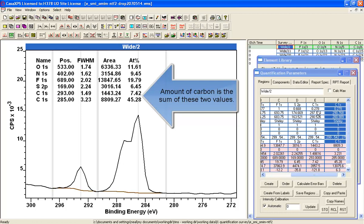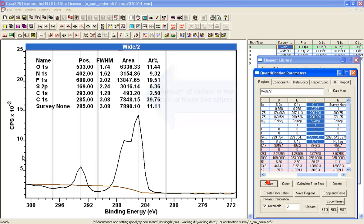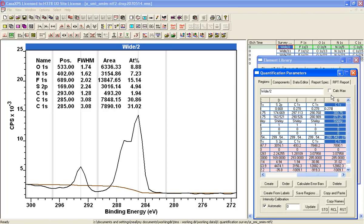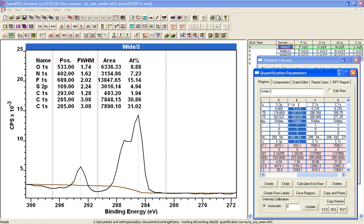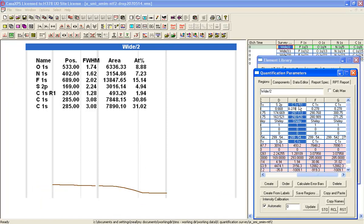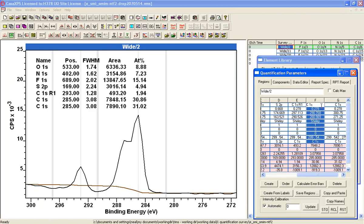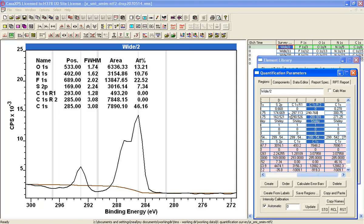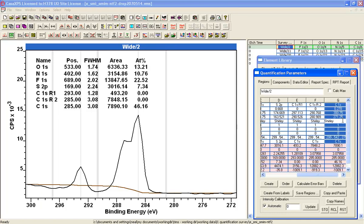I could create another region. And again, I want this to be carbon. And I'm going to call this region one. This one region two. I'm going to set the RSF to zero in that. The RSF to zero in that. And the trick is to change the background type.